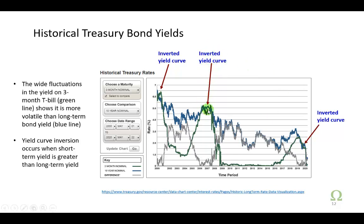Also, that inverted yield curve precedes the great recession that came in the wake of the 2008 global financial crisis. And the inverted yield curve that began around the first quarter of 2019 and continued into the second quarter preceded the recession in the second quarter of 2020. Interestingly, that recession was caused by the COVID-19 pandemic that crippled the entire world — unlike the other recessions, which had financial crises associated with them, this one was driven by a global pandemic, the novel coronavirus.